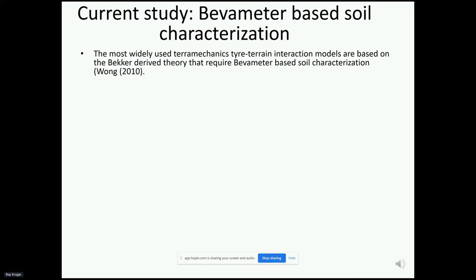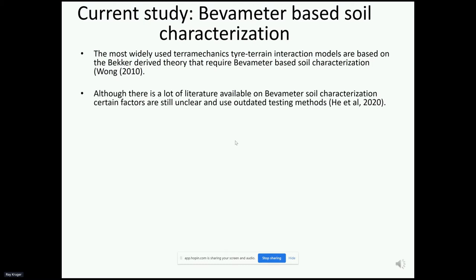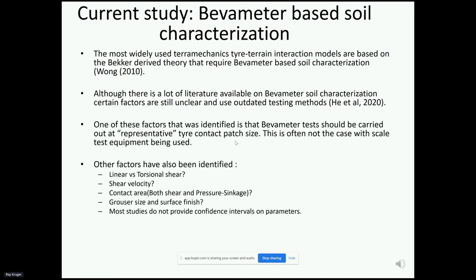My study focuses on bevameter-based soil characterization. Even today, the most widely used tire-terrain interaction models are based on Bekker-Wong theory, which requires bevameter-based soil characterization. Although there is a lot of literature available, certain factors are still unclear and rely on outdated testing methods. One identified factor is that bevameter tests should be carried out at representative tire contact patch areas — however, this is often not the case, with off-scale test equipment being used that only applies representative pressures.